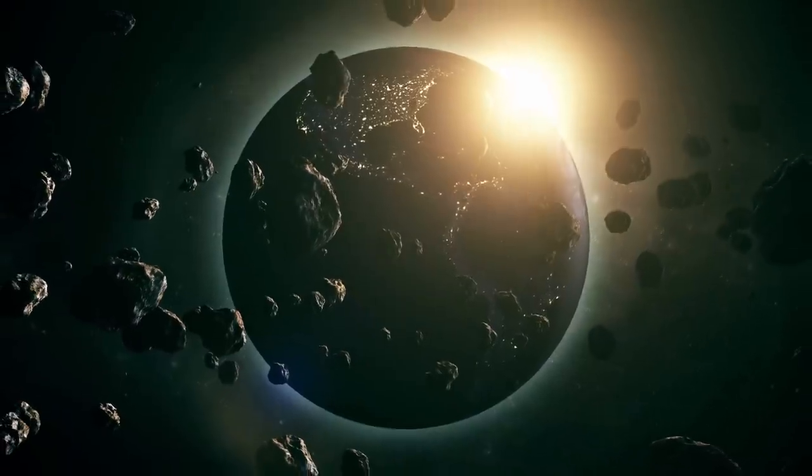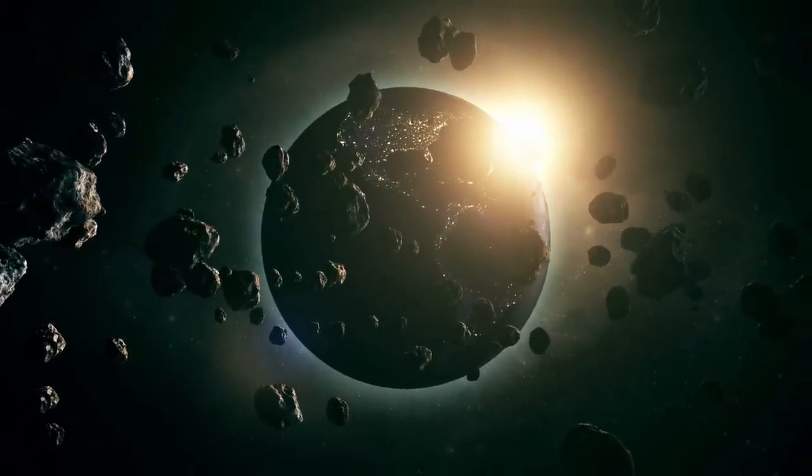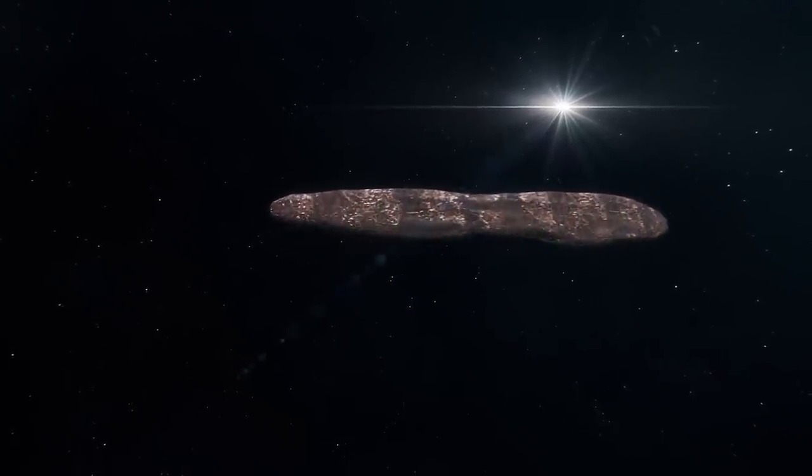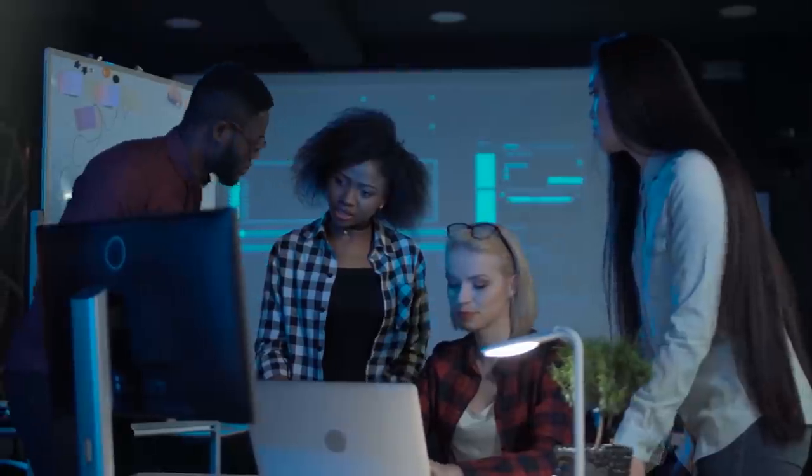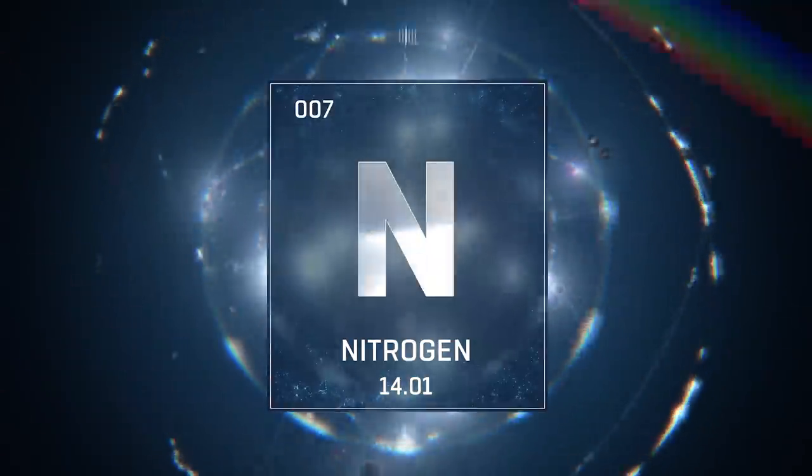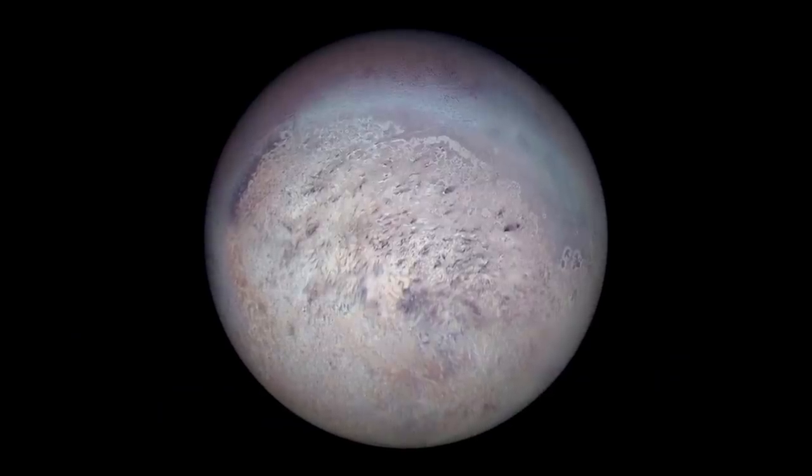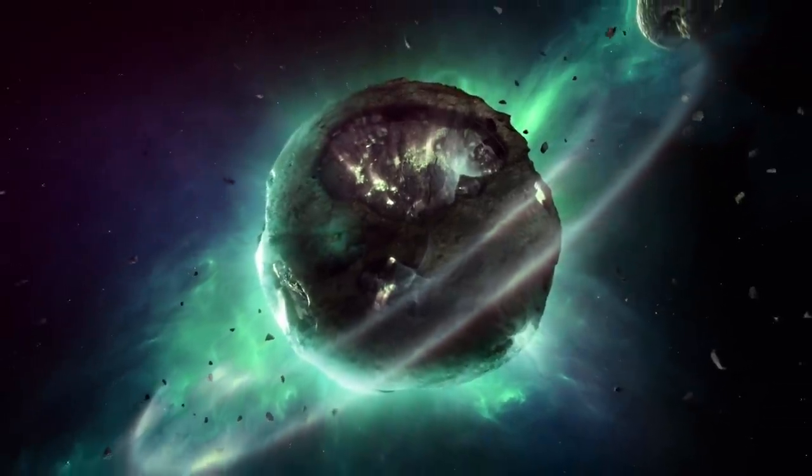No one is certain what Oumuamua is made of, so scientists calculated the different kinds of ice that would change from solid to gas at a rate that accounted for Oumuamua's rocket effect, and concluded that the object must be made of nitrogen ice. The same stuff you'd find on the surface of Pluto or Neptune's moon Triton.